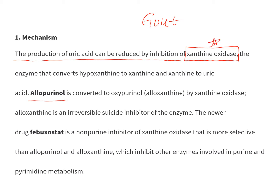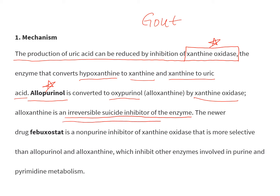This enzyme converts hypoxanthine to xanthine, and then xanthine gets converted to uric acid. Allopurinol is converted to oxypurinol by xanthine oxidase, and oxypurinol is an irreversible suicide inhibitor of this enzyme — meaning it blocks the enzyme irreversibly.